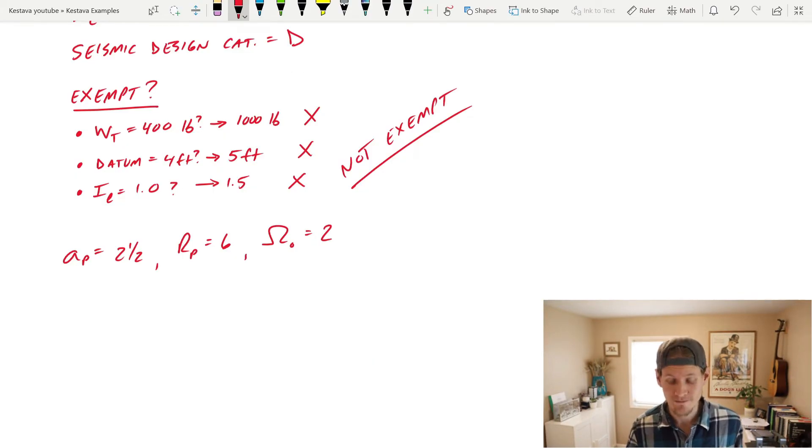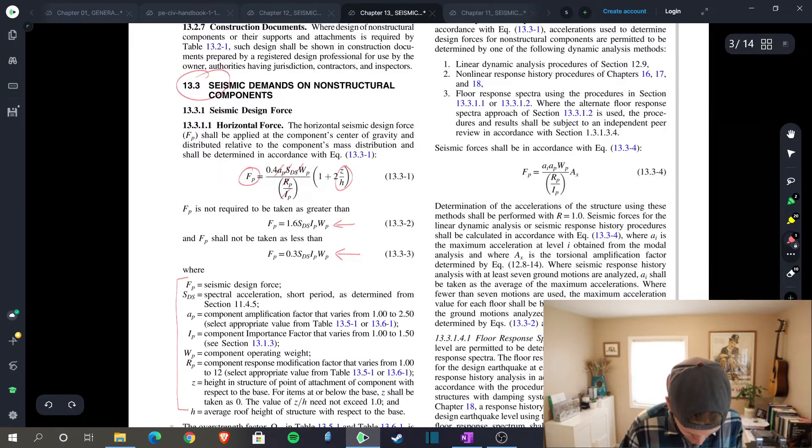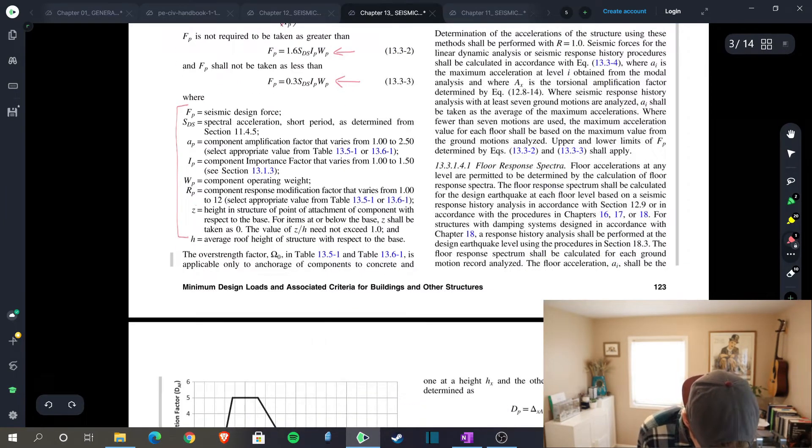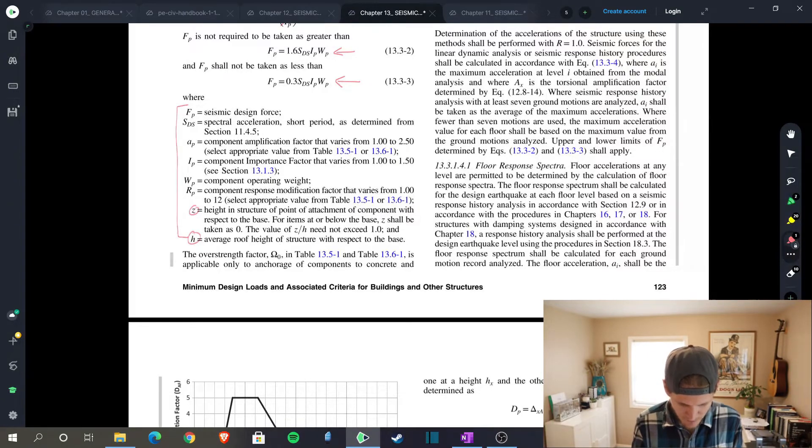Let's see what else we need in our equation. Well, it's cool because we have everything else besides Z and H. And if we scroll down, Z and H are given right here. Z is the height in structure of point of attachment of component with respect to the base. Z over H need not be taken greater than 1.0. And if your unit is located on the ground floor of something, then Z over H is just zero. And then H is defined as the average roof height of the structure with respect to the base. What does all that quite mean?